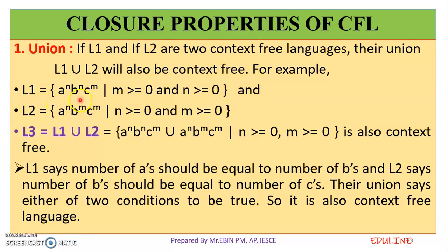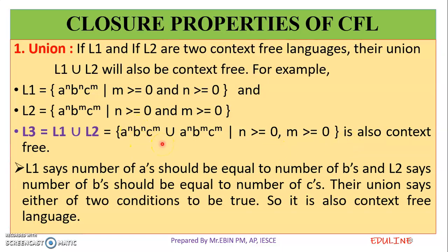We have L1 as a raised to n, b raised to n, c raised to m, and L2 as a raised to n, b raised to m, c raised to m — where the number of A's and B's are the same in L1, and the number of B's and C's are the same in L2. The union of L1 and L2 satisfies the context-free language closure property under union.